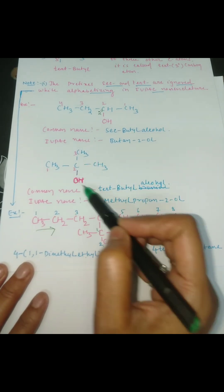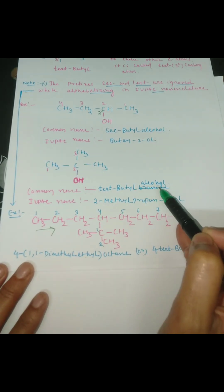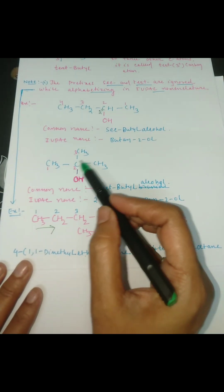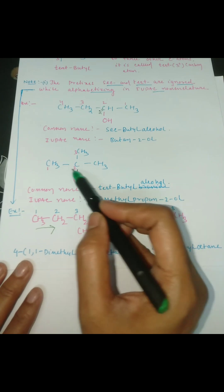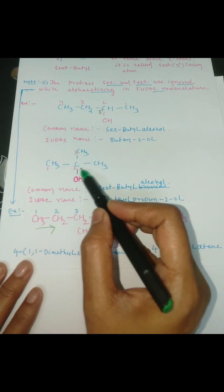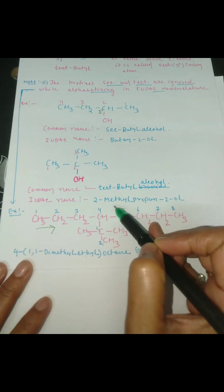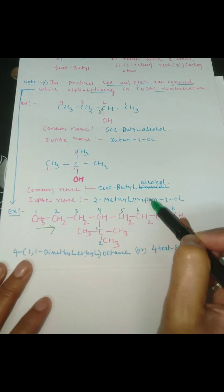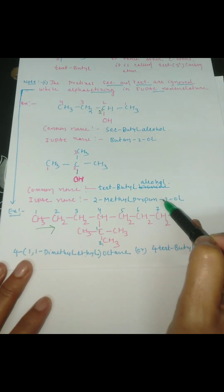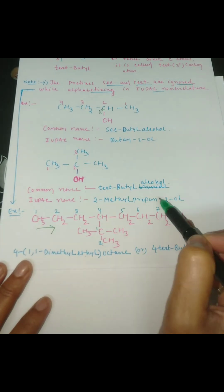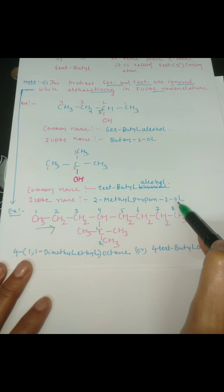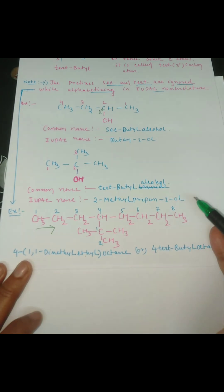Similarly, in the tertiary butyl group with an -OH group present, the common name is tertiary butyl alcohol. But the IUPAC name: there is a methyl group at position two and the functional group -OH also at position two. The word root is propane, so the name is 2-methylpropan-2-ol. The suffix is -ol. Thank you.